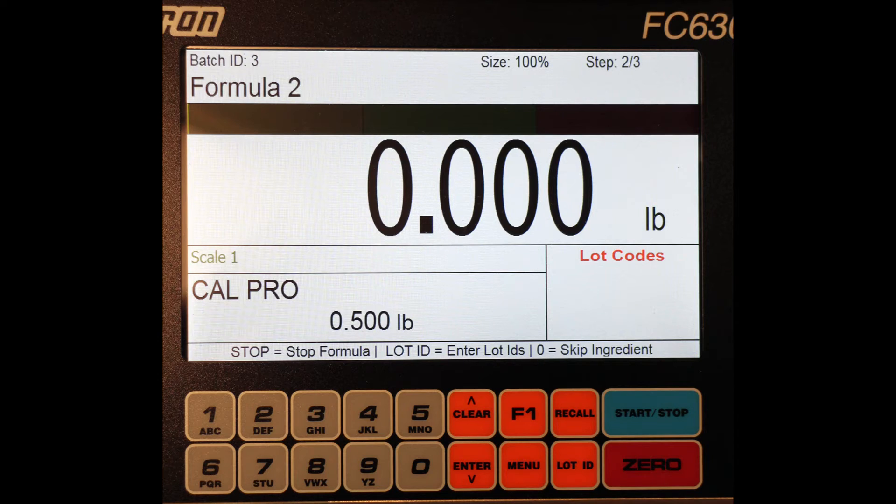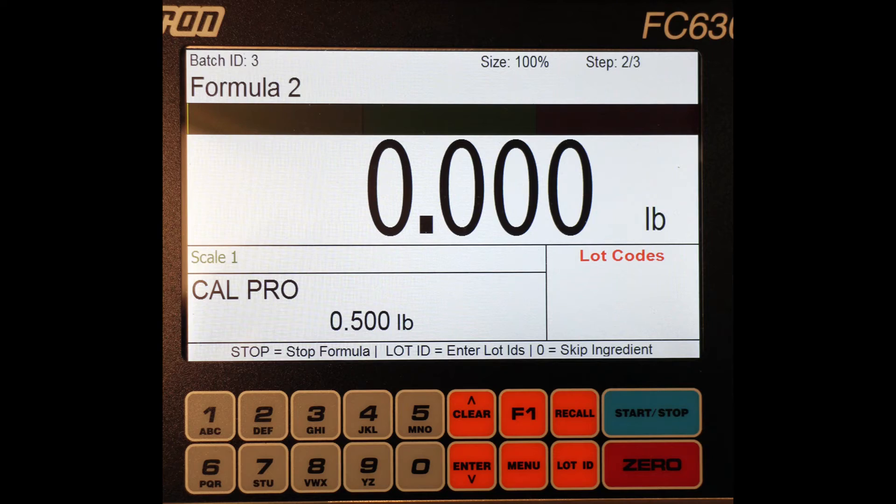Just below the display you can see the controls, all clearly labeled in a large bold font. Start, stop, up, down arrow keys, alphanumeric keys, lot ID. We have kept the number of keys to a minimum to make it easy to operate.